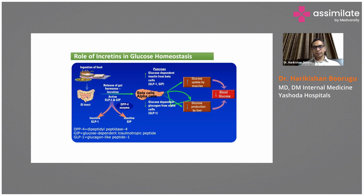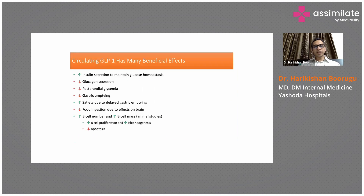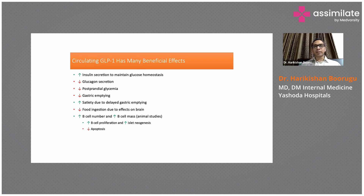There are various drugs available in this group: sitagliptin, vildagliptin, and teneligliptin. Sitagliptin dose is 50 to 100 mg per day; vildagliptin is also 50 to 100 mg per day; linagliptin is 5 mg per day. All of them can be used in patients with renal impairment. However, for linagliptin or teneligliptin, no dose adjustment is needed even with renal impairment, whereas sitagliptin and vildagliptin doses need to be reduced with moderate to severe renal impairment.